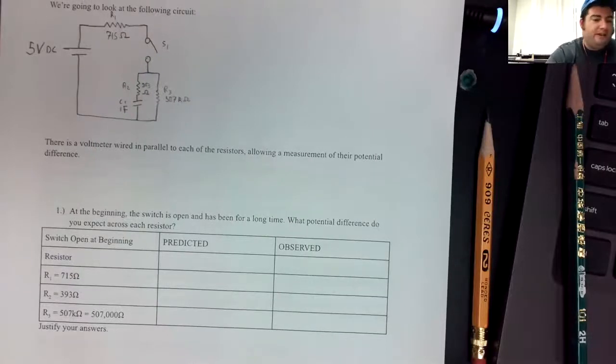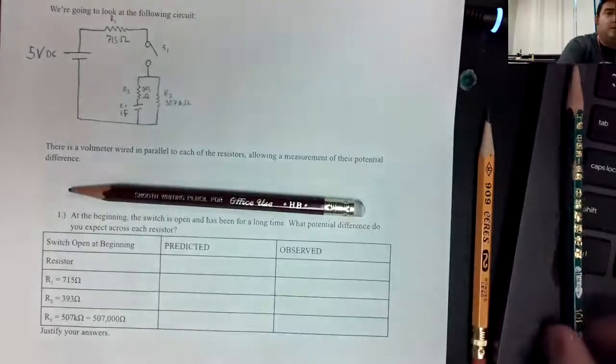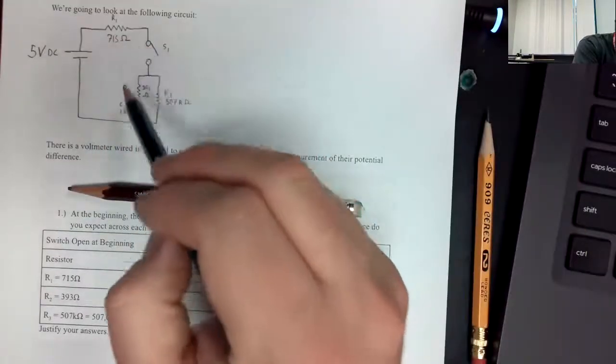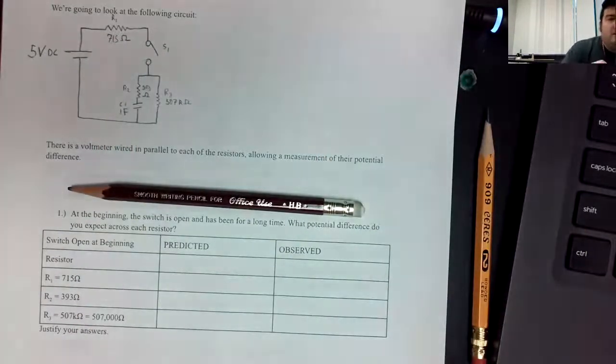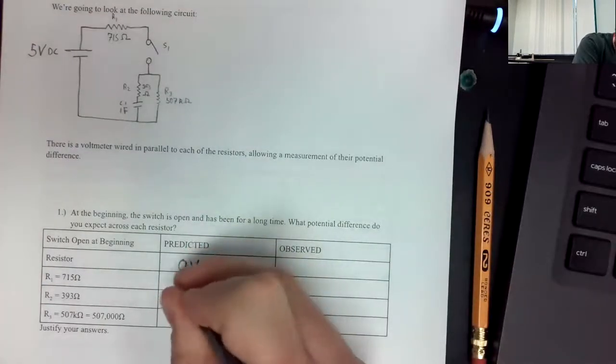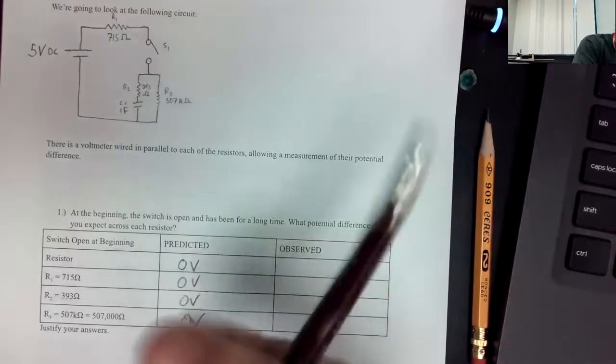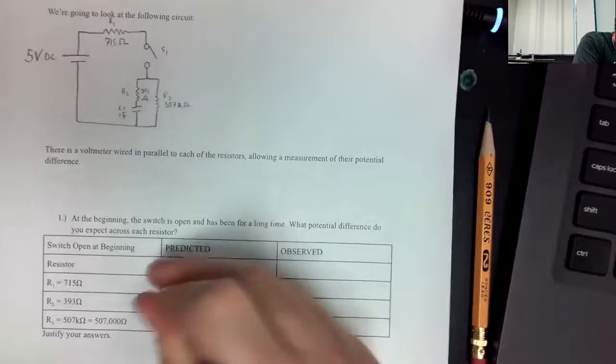At the beginning, because the capacitor has no charge and there's no path for current to flow, I think we should predict 0 volts for all of them, except of course this one because that's not a resistor.